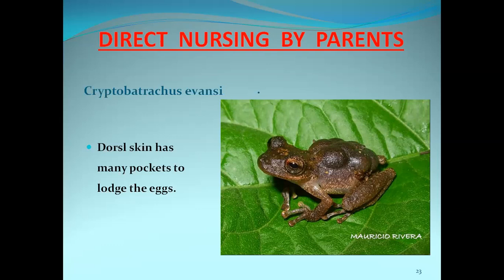The next example for direct nursing is Cryptobranchus evansi. In Cryptobranchus evansi, the dorsal skin develops many pocket-like structures on its back. These pocket-like structures house the eggs, which are not visible from the exterior. In these pockets, the eggs develop until they hatch.